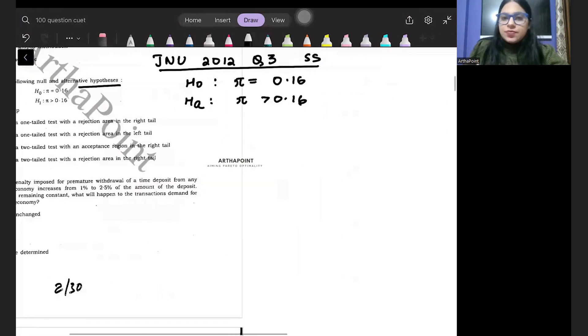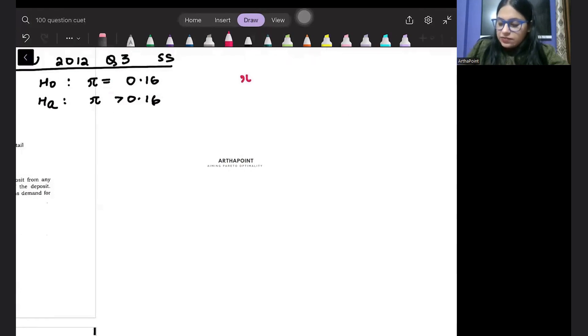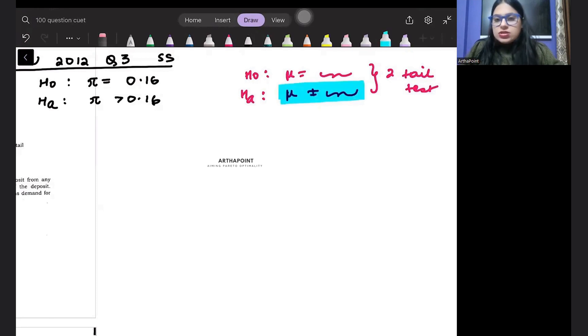So, let us understand. When you have null like this, whenever you go ahead and say null is μ is equal to something and alternative is μ not equal to something, then this is called a two-tailed test. Two-tailed test is when the direction is not known. You have not given direction. That is a two-tailed test.